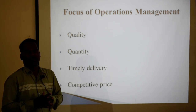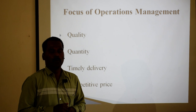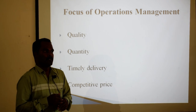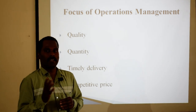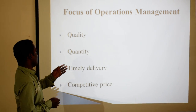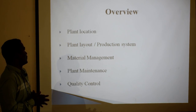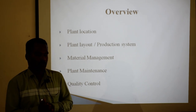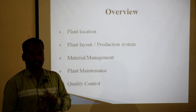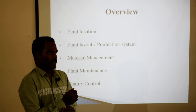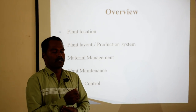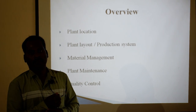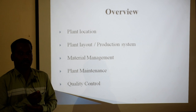Then, competitive price. For this, we have to produce our goods at a competitive cost — minimum cost and maximum output. By these points, we come to the conclusion that operations management is a conversion of input material into output material. There are four concepts the manager should have in mind: quality, quantity, time, and competitive price.